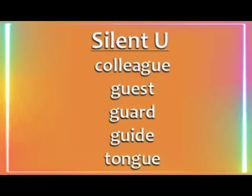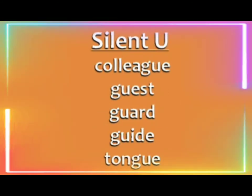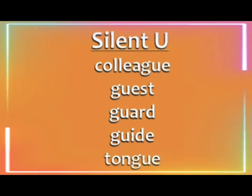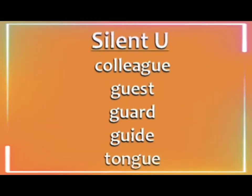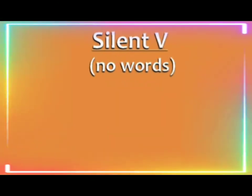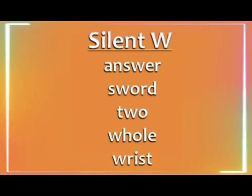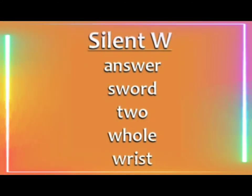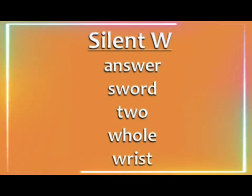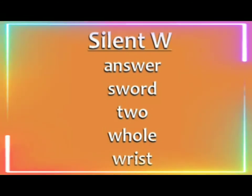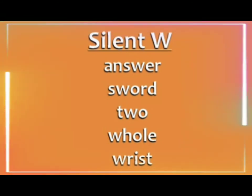Silent U: colleague, guest, guard, guide, tongue. Silent V: no words. Silent W: answer, sword, two, whole, wrist.